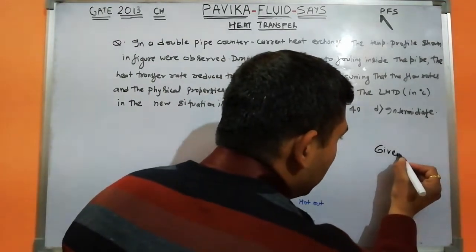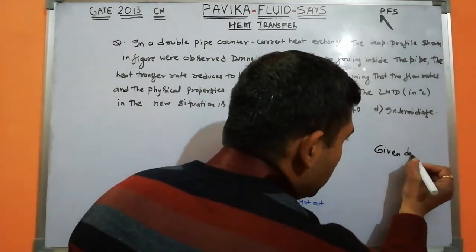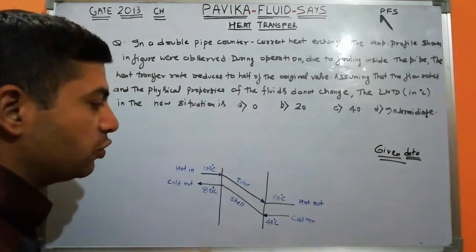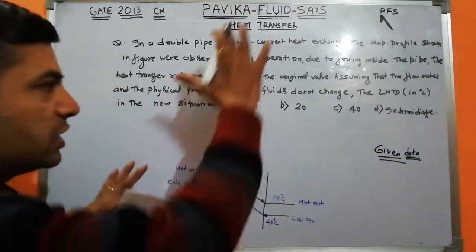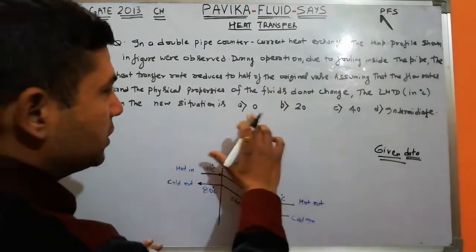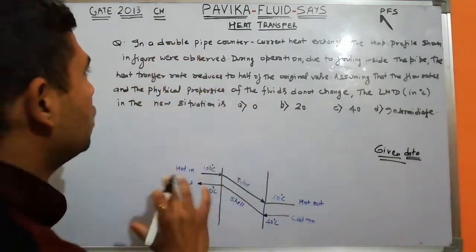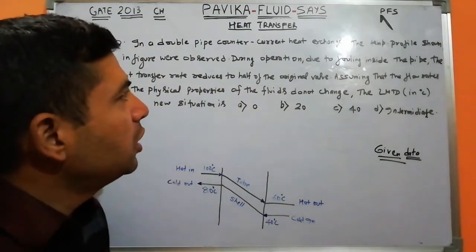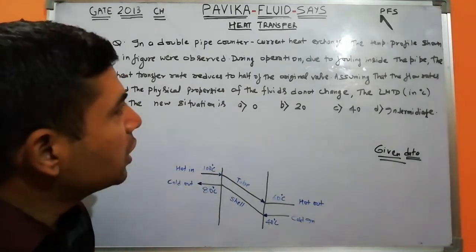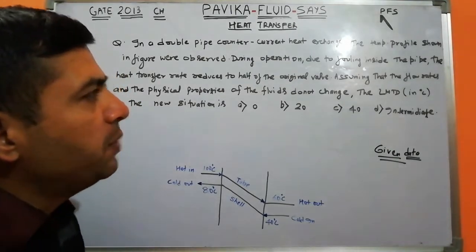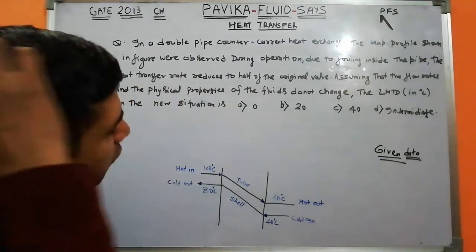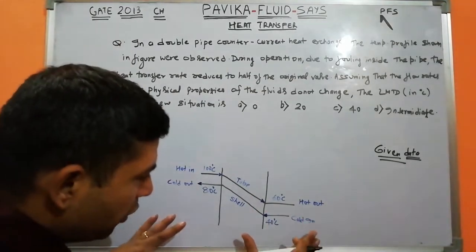We have given data for this question — the numerical. A diagram is given in the question with 4 options. In a double pipe counter-current heat exchanger, the temperature profile shown in the figure was observed.